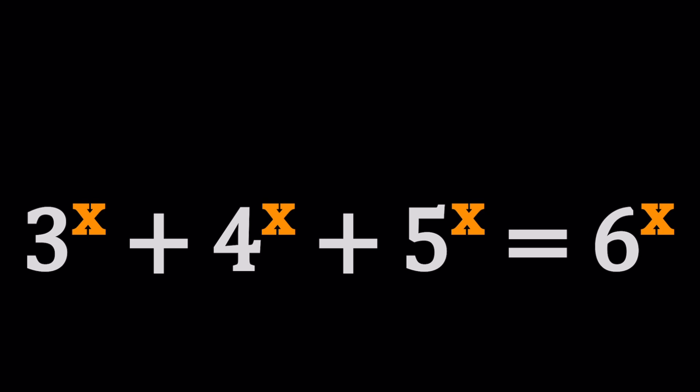So we have three consecutive numbers and we raise them all to the x power and that is equal to the next number to the x power. That's a pretty interesting scenario and actually very rare. Obviously if we had 12 on the right hand side instead of 6, the answer would be fairly easy to find because that would just be 1. That also gives you an idea that x needs to be probably greater than 1 or maybe less than 1. What do you think? Anyways, let's get into the problem.